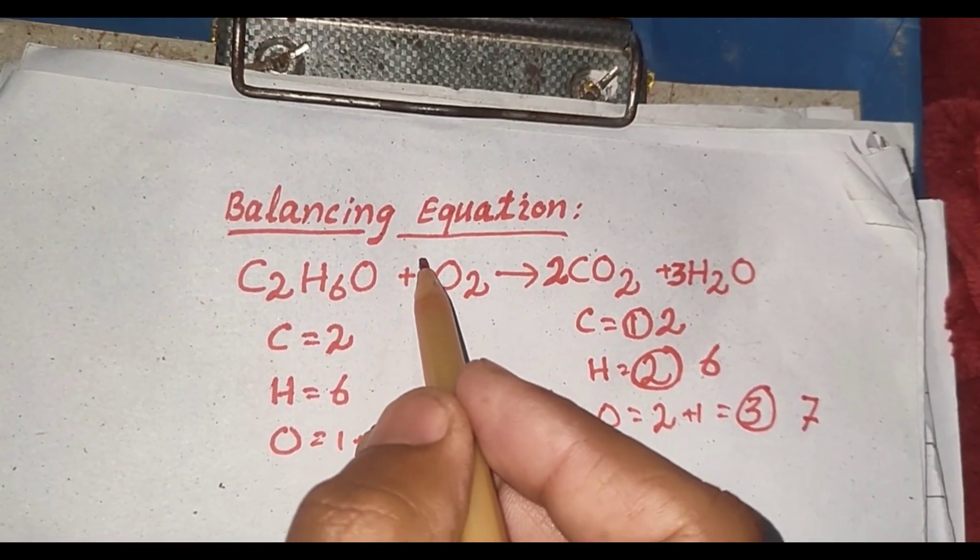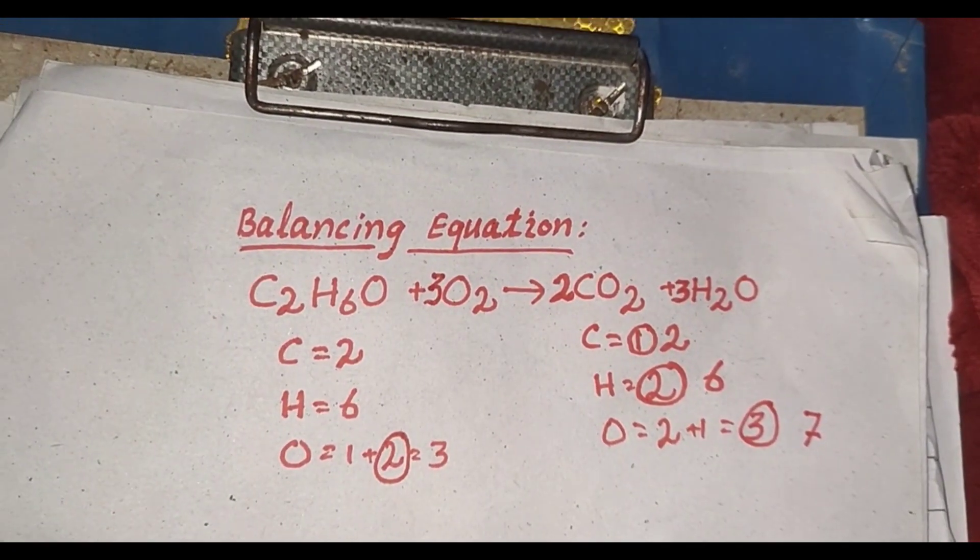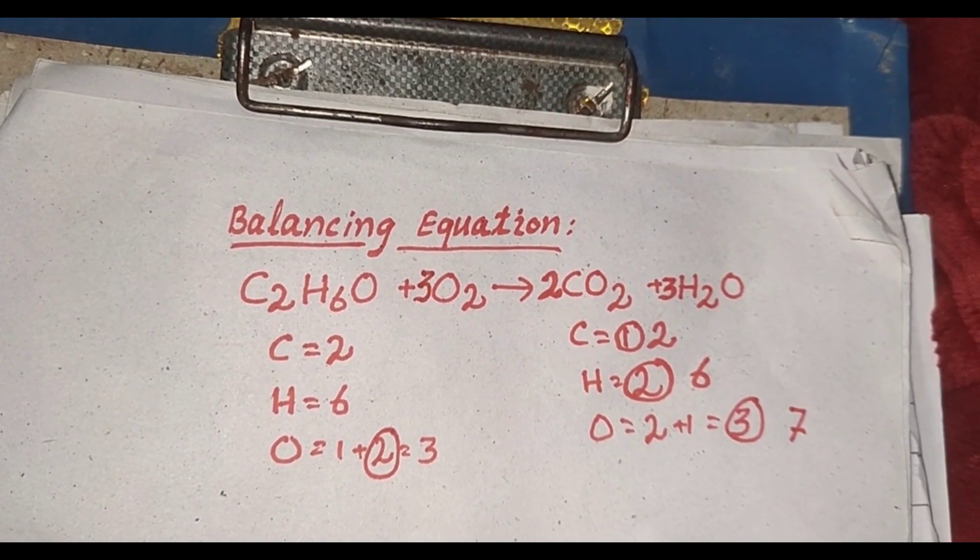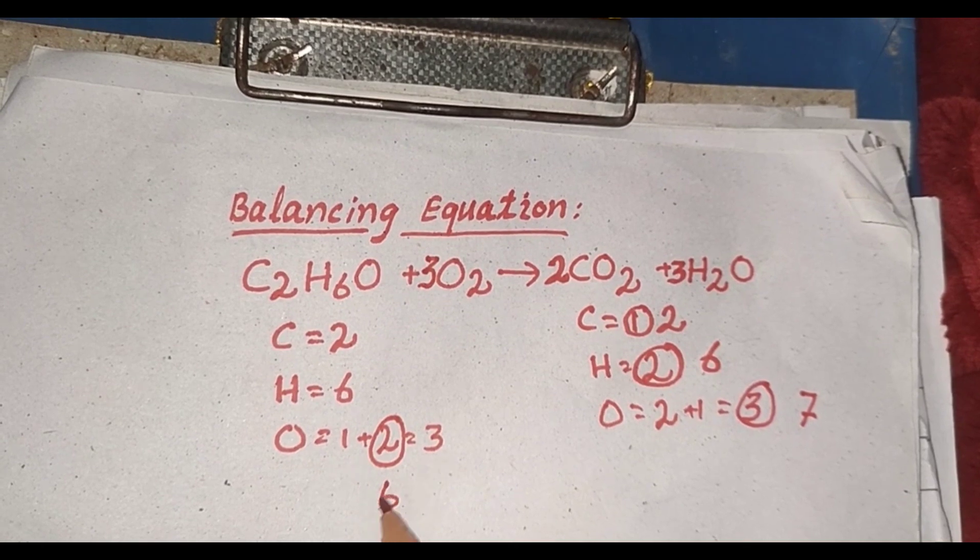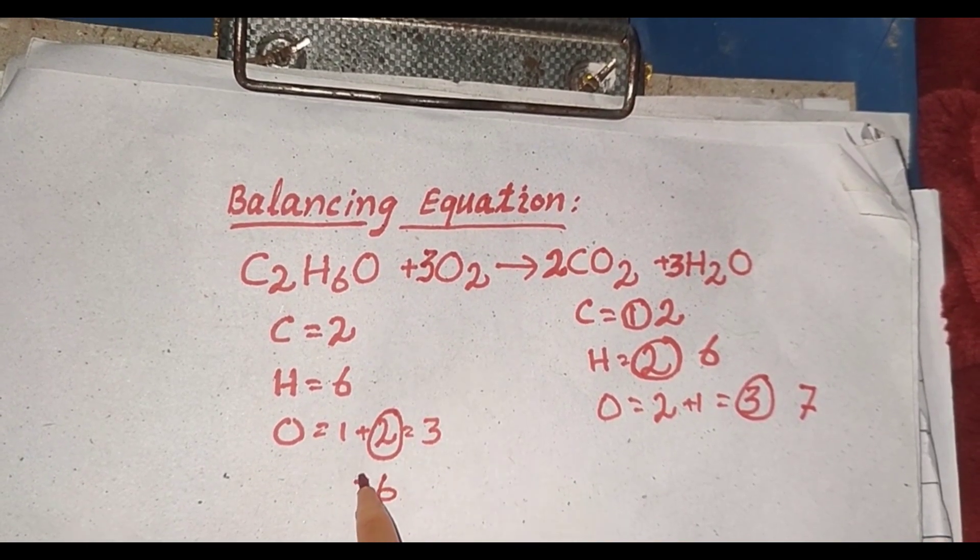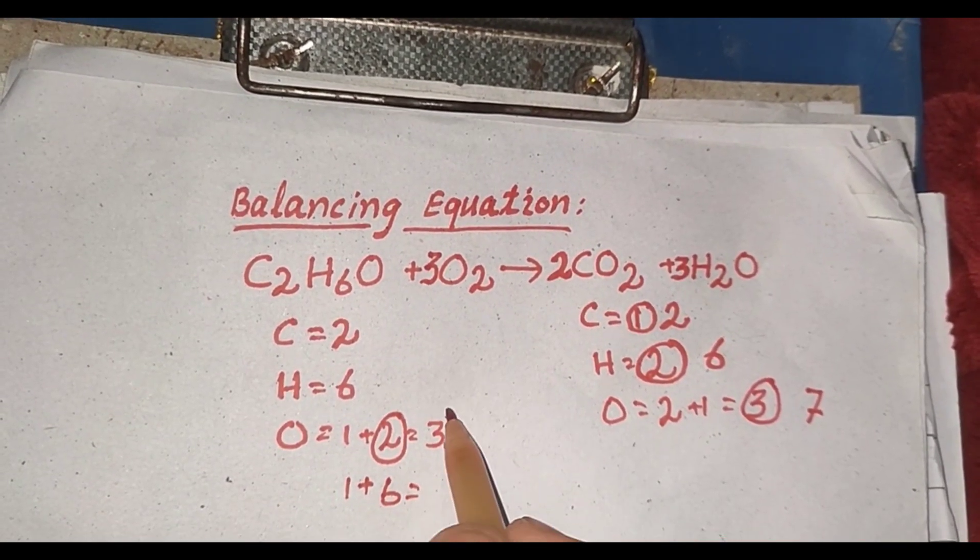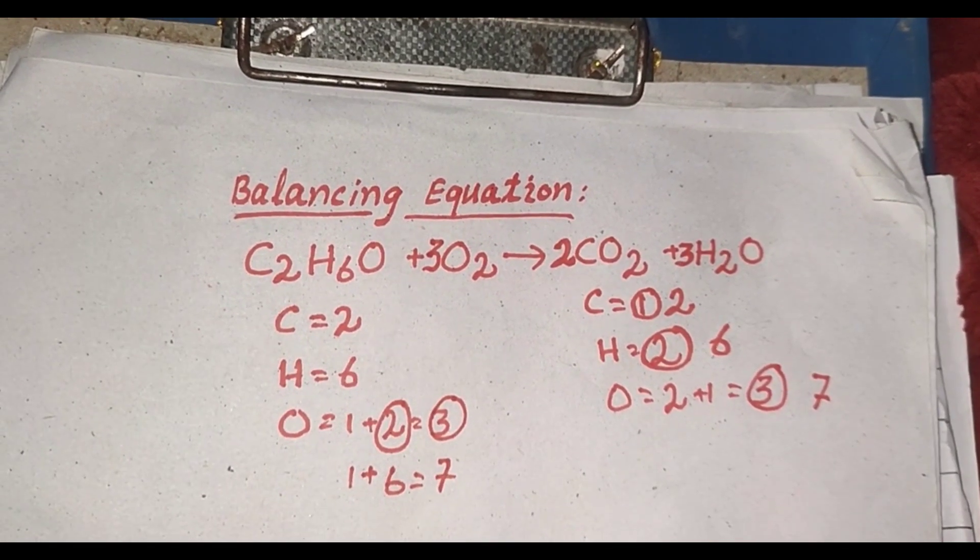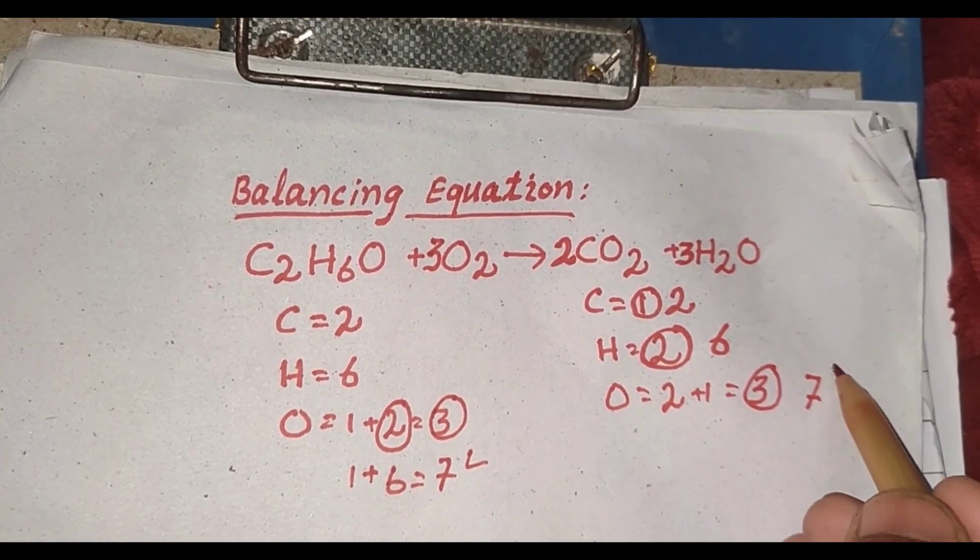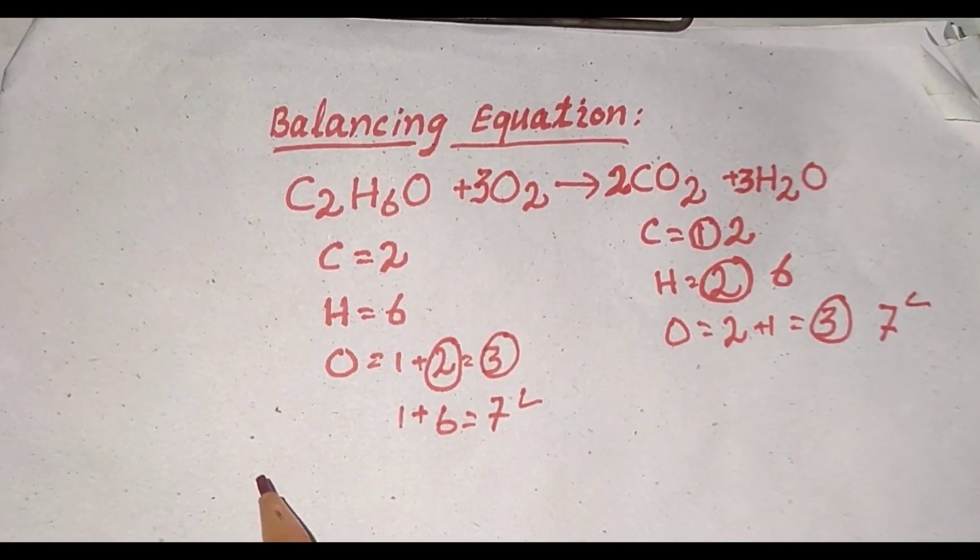In oxygen, we multiply by 3. This will be 6, and 6 plus 1 is total 7. This equation will be balanced.